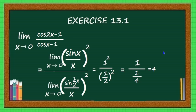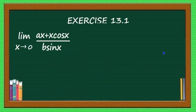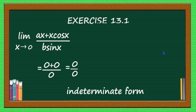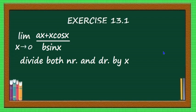Now the next question: limit x tending to 0 of (ax + x·cos x) divided by (b·sin x). If you put x equal to 0, the numerator is a(0) + 0·cos(0) = 0, and the denominator is b·sin(0) = 0. This is 0/0, which is an indeterminate form. The method is to divide both numerator and denominator by x.